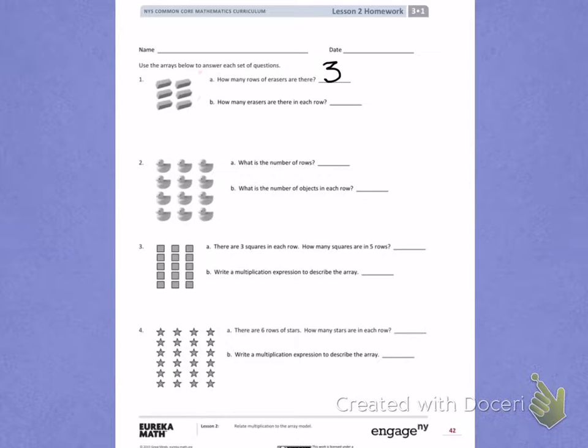Letter B: How many erasers are in each row? In the first row, there are 2 erasers. In the second row, there are 2 erasers. And in the third row, there are 2 erasers. So there are 2 erasers in each row. Try number 2 on your own.